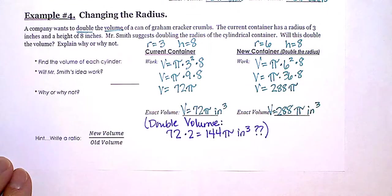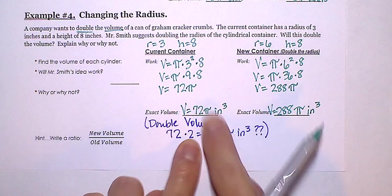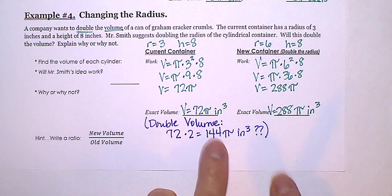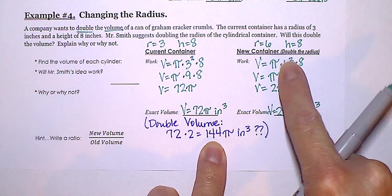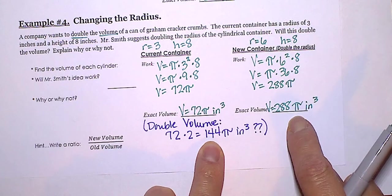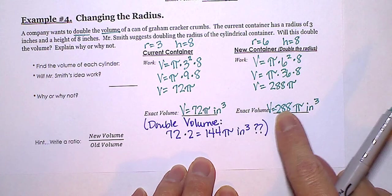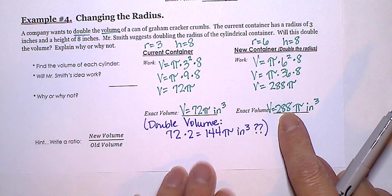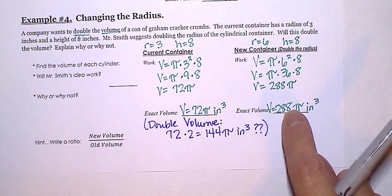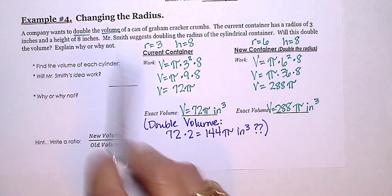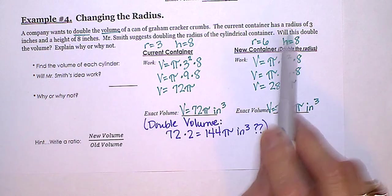Well, we didn't quite double the 72 because we thought our answer should be 144. But actually by doubling the radius, we actually kind of quadrupled that. It's 4 times this amount. So this is actually too big. So in order to double the volume, we don't want to just double the radius.